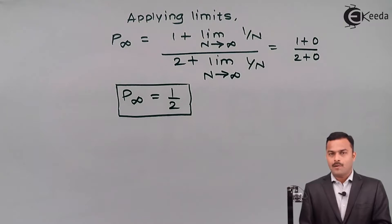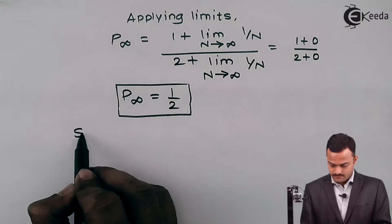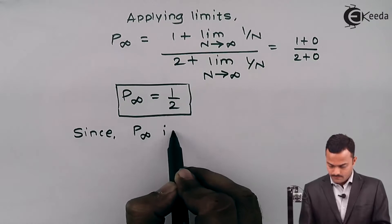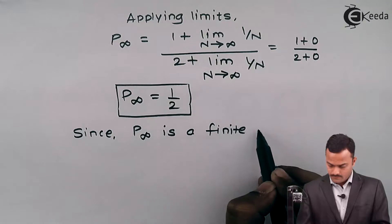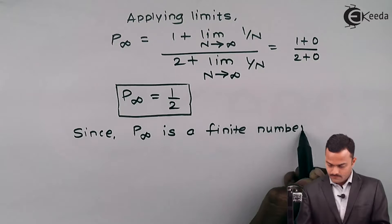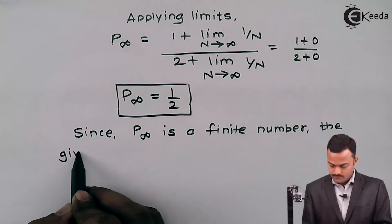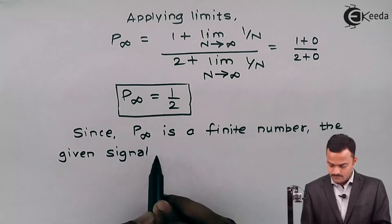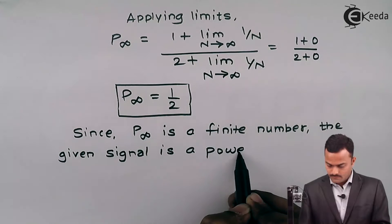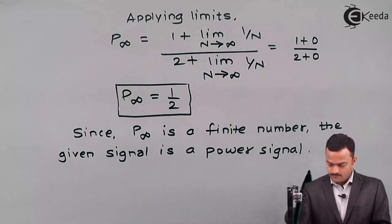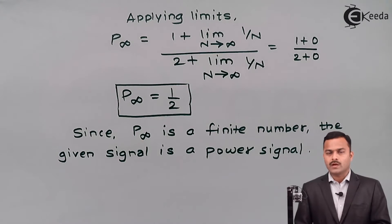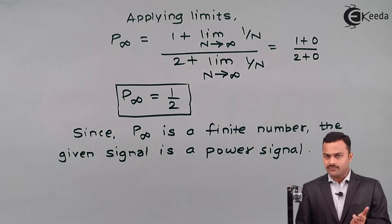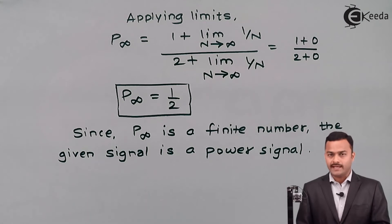The power is 1/2, which is a finite number. Hence the signal is a power signal. To summarize: we first calculated energy — since it was infinite, we then calculated power, and since power is finite, the signal is a power signal. Thank you.